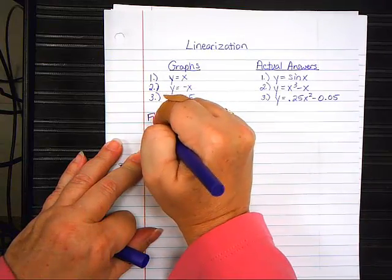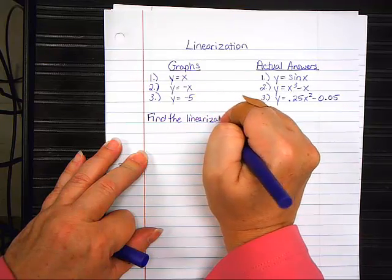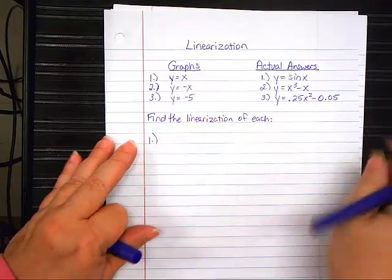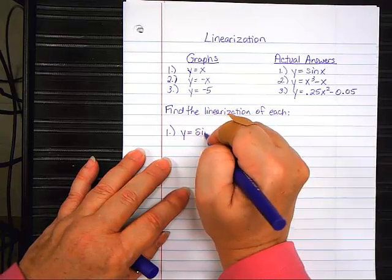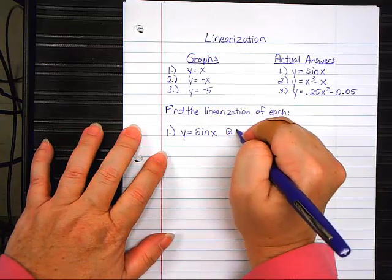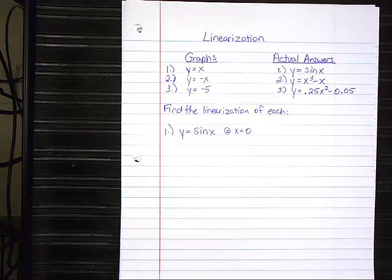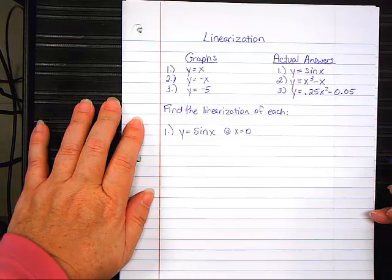So, let's review how to do this. We're going to find the linearization of each of these. Number one. We start with the curve Y equals sine of X. And it will always give you a point that we're zooming in on. We zoomed in on zero. Because as I zoomed in my screen, it was equal distance on either side from zero. Always around zero.